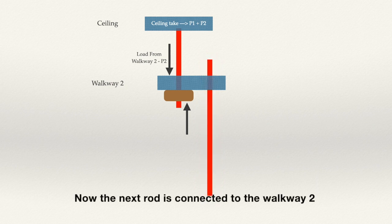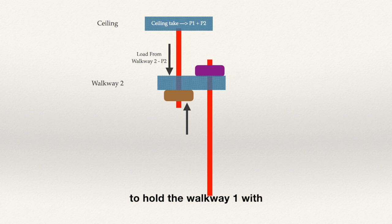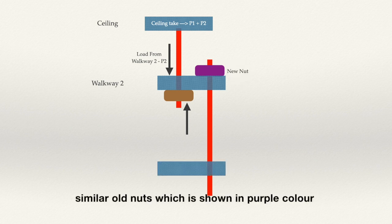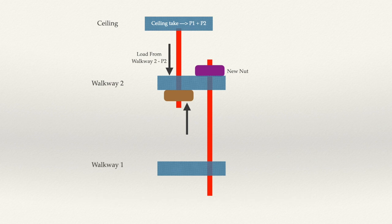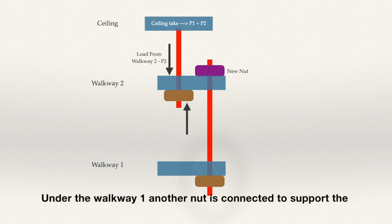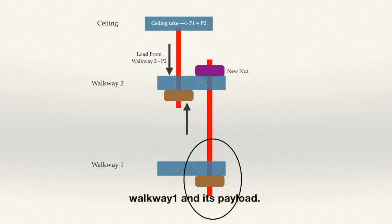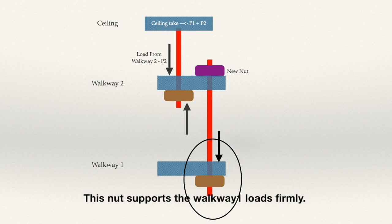Now, the next rod is connected to walkway 2 to hold walkway 1 with the similar old nut which is shown in pink color. Under walkway 1, another nut is connected to support walkway 1 and its payload. This nut supports the walkway 1 loads firmly.